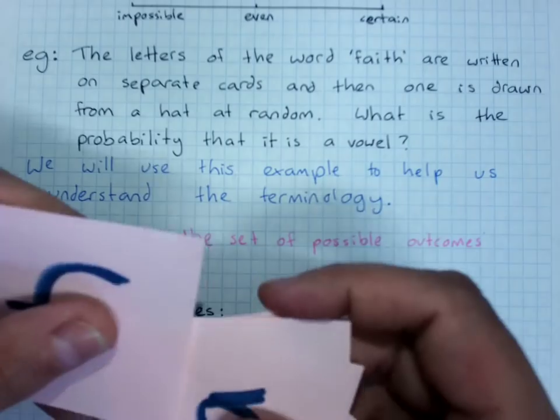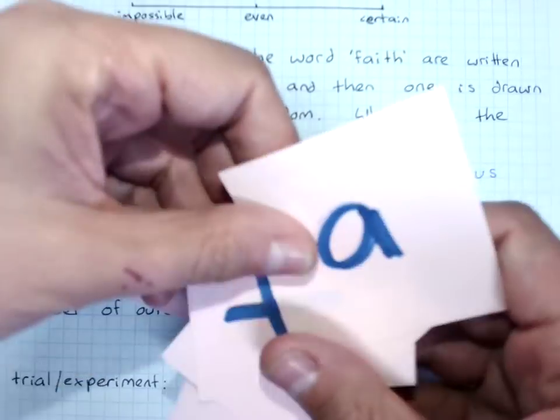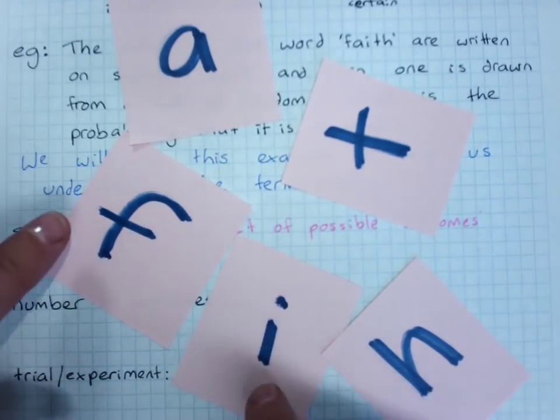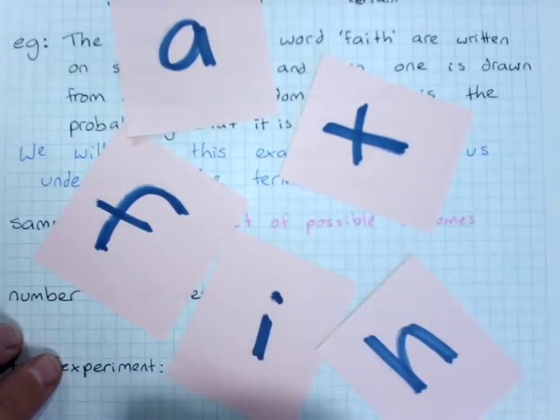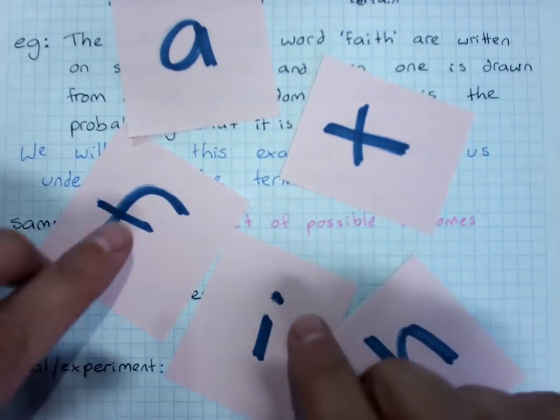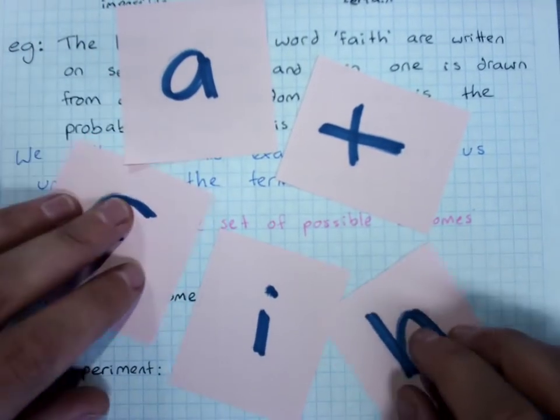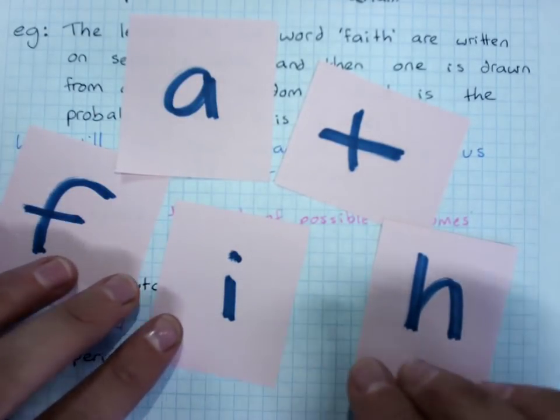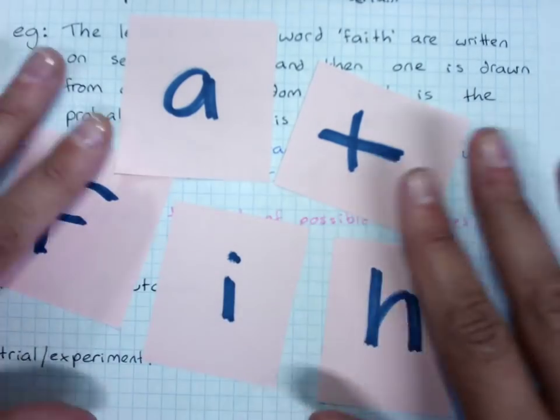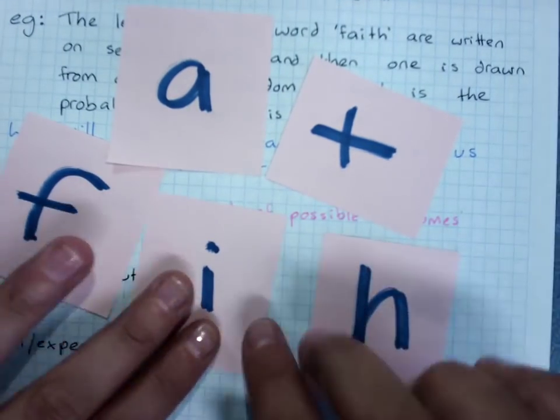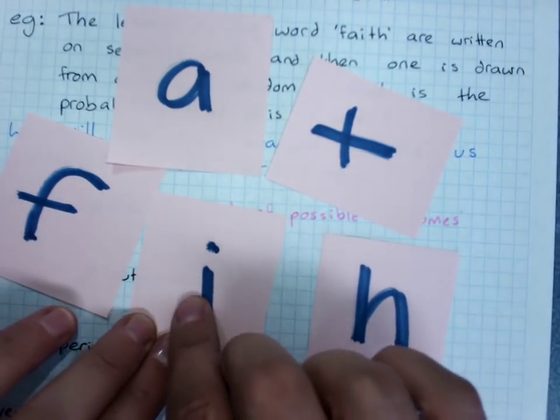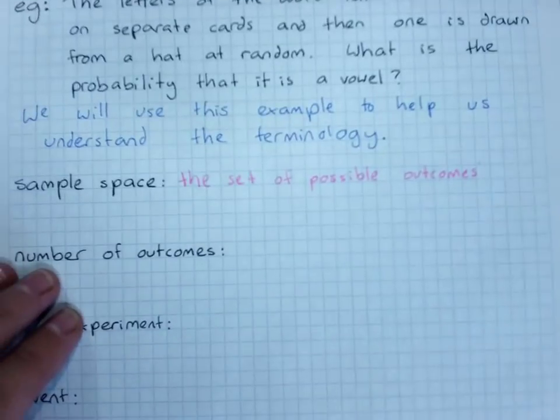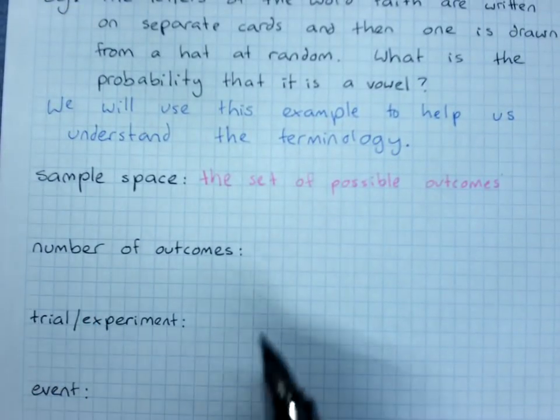Now an outcome is any one of the things that can happen. So when you have the letters of faith written on cards, I could get an F, and A, and I, a T, or an H - all of those different options are outcomes. Now if I'd picked a word which had two of the same letter, that would still be two separate outcomes.